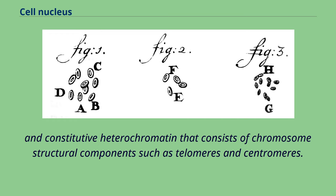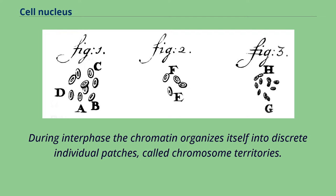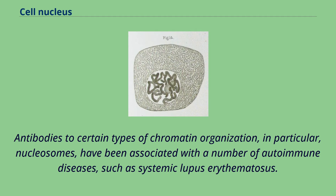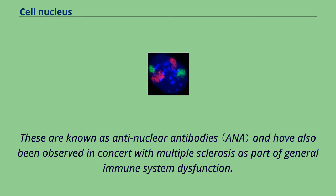During interphase, the chromatin organizes itself into discrete individual patches called chromosome territories. Active genes, which are generally found in the euchromatic region of the chromosome, tend to be located towards the chromosome's territory boundary. Antibodies to certain types of chromatin organization, in particular nucleosomes, have been associated with a number of autoimmune diseases such as systemic lupus erythematosus. These are known as antinuclear antibodies and have also been observed in concert with multiple sclerosis as part of general immune system dysfunction.